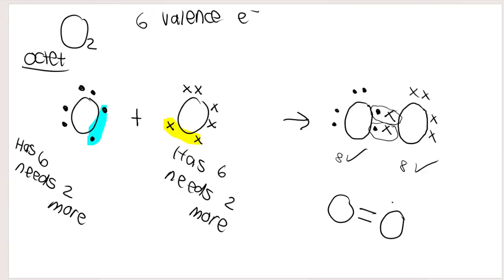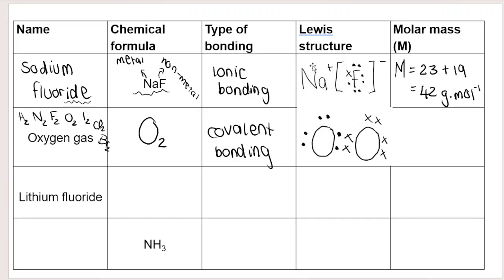There's a shared pair and another shared pair, so the structural formula shows a double bond. That is the diagram we draw in the table. I want to point out the differences: in ionic bonding we see brackets and charges; in covalent bonding there are no brackets and no charges — they're sharing electrons. Molar mass of oxygen: atomic mass is 16, and we multiply by two because it's O₂, so that is 32 grams per mole.